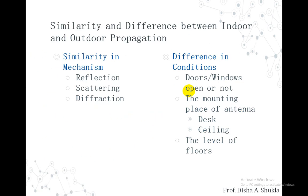Similarities and dissimilarities between indoor and outdoor propagation can be noted. The similarity is that in both cases the three mechanisms — reflection, scattering, and diffraction — will occur. The differences include whether doors or windows are open or closed, the mounting location of the antenna (on a desk or on the ceiling), and the floor level at which propagation is being considered.